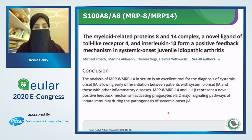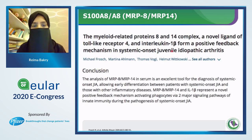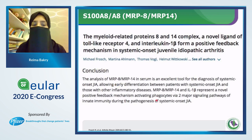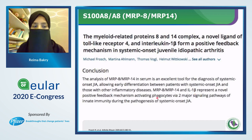A paper published in 2009 about the myeloid-related protein 8 and 14 complex as a novel ligand of toll-like receptor for interleukin-1 beta and a positive feedback mechanism in systemic JIA concluded that analysis of MRP8 and MRP14 in serum is an excellent tool for diagnosis of systemic JIA, allowing early differentiation between systemic JIA and other inflammatory diseases. MRP8/MRP14 and interleukin-1 beta represent a novel positive feedback mechanism activating phagocytes by two major signaling pathways of innate immunity during the pathogenesis of systemic JIA.